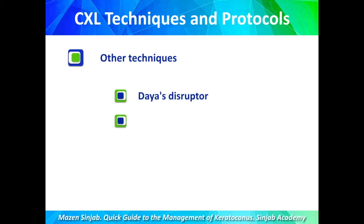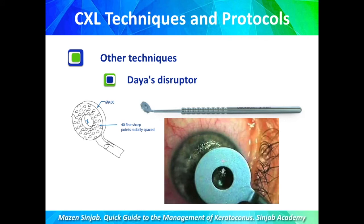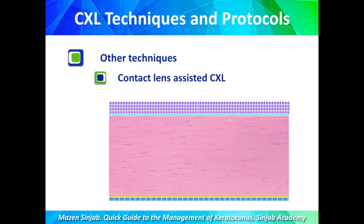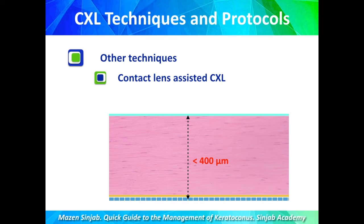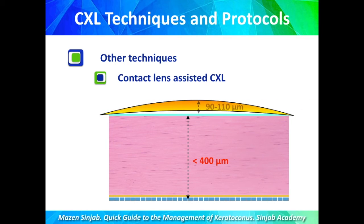Other techniques include the dia-disruptor and contact lens-assisted corneal crosslinking. The dia-disruptor is an instrument that creates fenestrations and punctures through the intact epithelium to facilitate riboflavin penetration. For contact lens-assisted crosslinking, after epithelium removal, if the stroma is less than 400 microns, a contact lens saturated with riboflavin is applied to add an artificial thickness of approximately 90 to 110 microns, ensuring the UVA reaching the endothelium is not harmful.